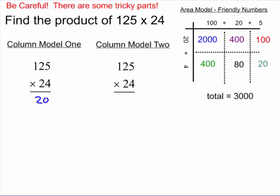4 times 5 is 20. 4 times 20 is 80. And 4 times 100 is 400. So I've taken care of these three pieces right here in blue. I'm going to get that out of the way so I can see where the next part comes from. Now the next part is 20 times 5.